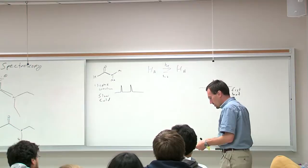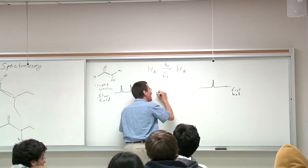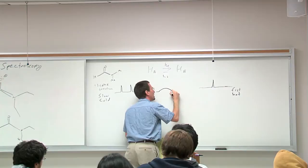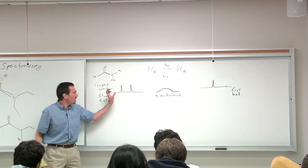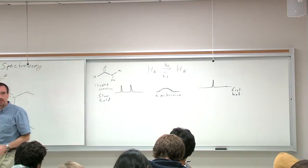Somewhere between that cold point and hot you hit a middle point, which is called coalescence. At coalescence, what's happening is each of these peaks is getting broader and broader until they merge. This is the uncertainty principle at work.